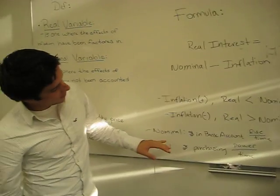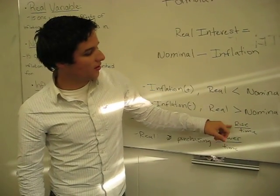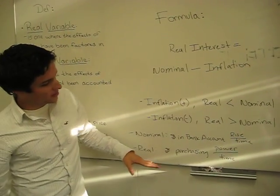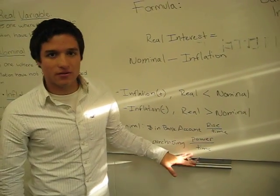Nominal interest rate is the amount of money in a bank account that arises over time, which can also decrease. Real interest rate is the purchasing power you have over time.